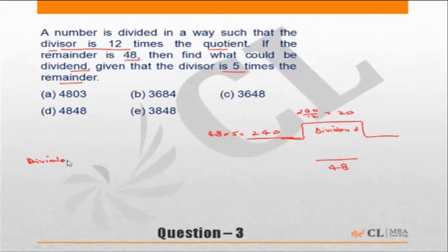So the dividend should be 240 into quotient, into the dividend... I'm sorry, into the divisor. So divisor into quotient.